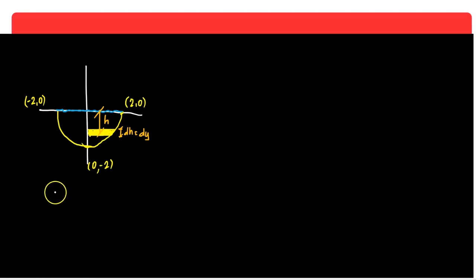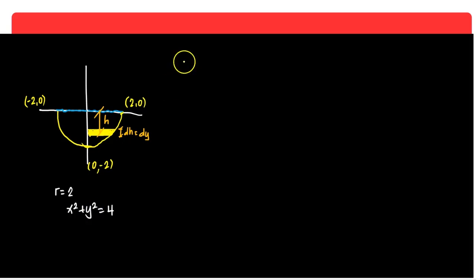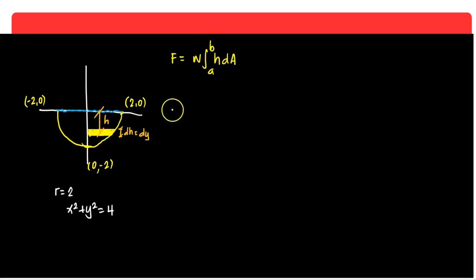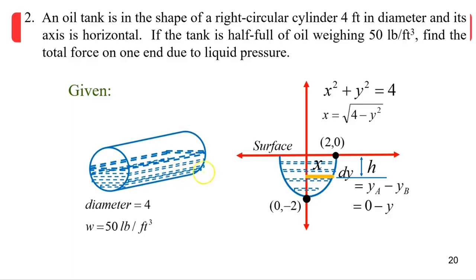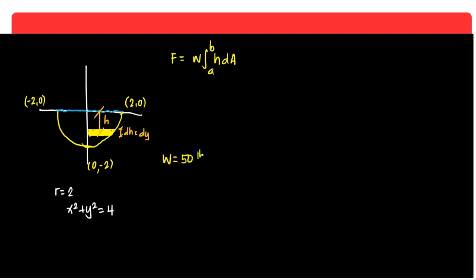The equation of the circle, with radius 2 and center at (0, 0), is x² + y² = 4. The formula for the force is F = W · ∫ h dA from A to B. The weight density W is given as 50 pounds per cubic feet, which is constant. The depth H comes from the surface of the liquid: 0 minus y.